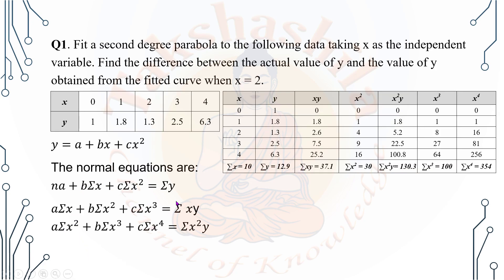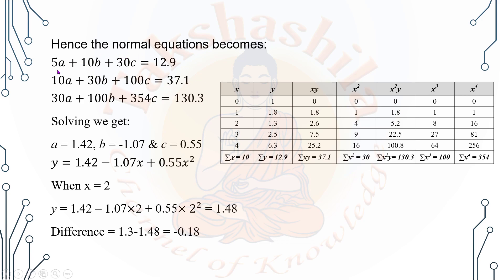Now we will go to the procedure. First, we will take a normal equation and substitute the values. We will take a table and add columns for x, y, x², x³, and x⁴. We will substitute into the normal equation. In the calculator, we will calculate the three equations for A, B, and C.